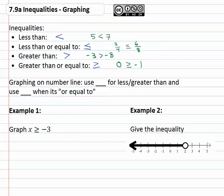As we do, we need to know if it's going to be less than, less than or equal to, greater than, or greater than or equal to. And how we show that on the graph is when it's just less than or greater than, we'll use an open dot. When we have that or equal to with the line underneath, we'll use a closed dot.